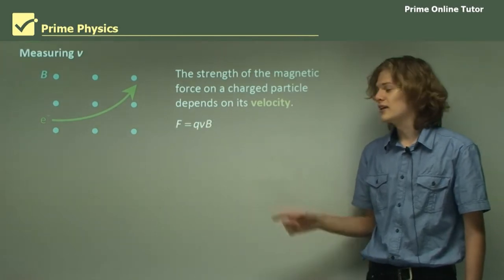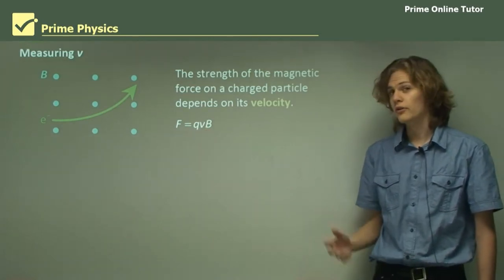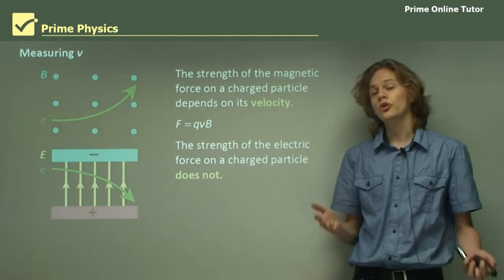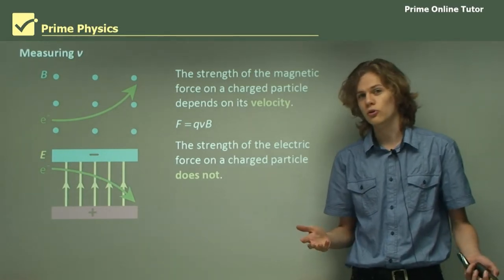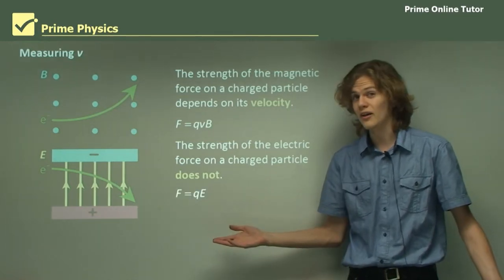The equation for it is f equals qVb, and the v here is what we're interested in. On the other hand, the strength of the electric force on a charged particle is not dependent on its velocity. If you recall, the equation for its force is f equals qE. There's no v in there.